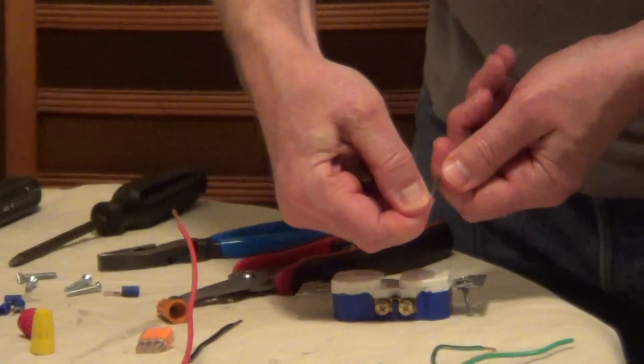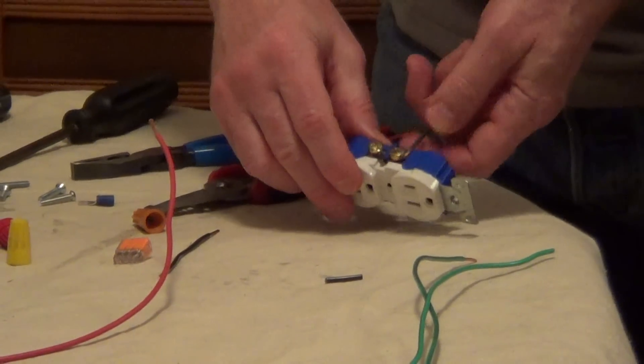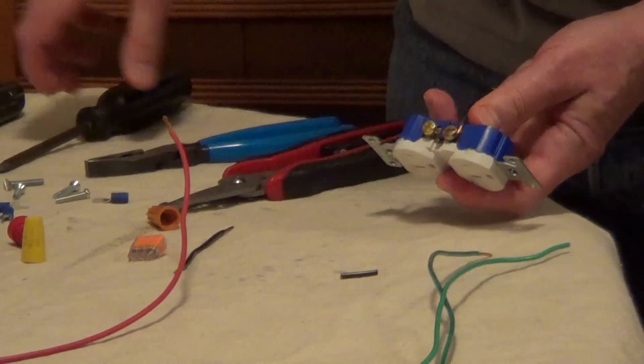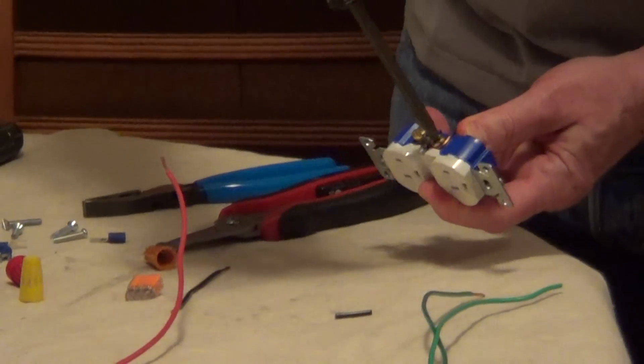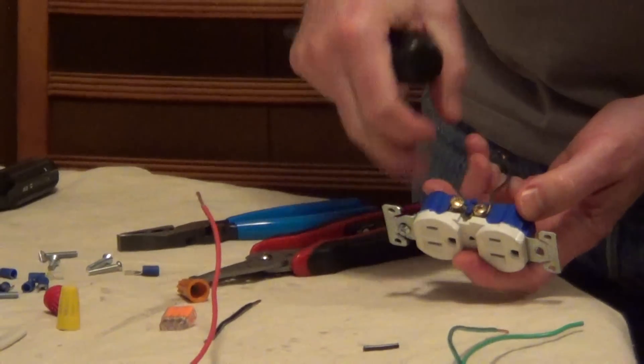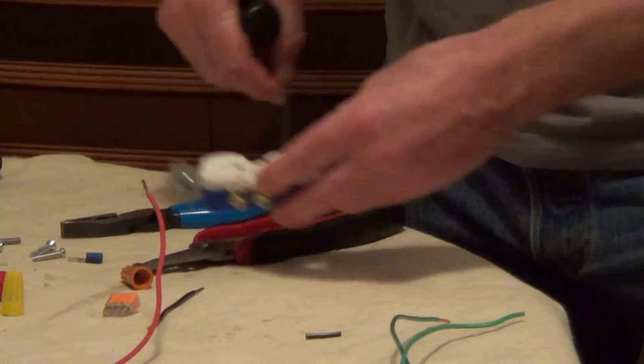And now when you have your hook, you'd want to wrap this in a clockwise direction around the screw terminal. And what that's going to do is it's going to tighten down as you tighten the screw. If you were to put this on in a counterclockwise direction, it could actually push it off.